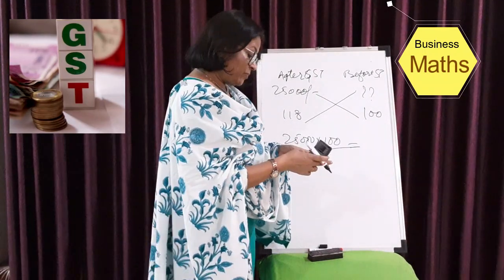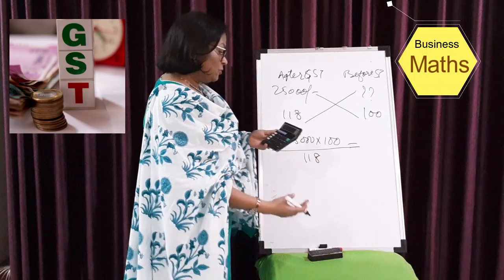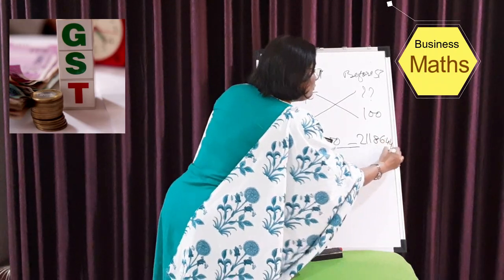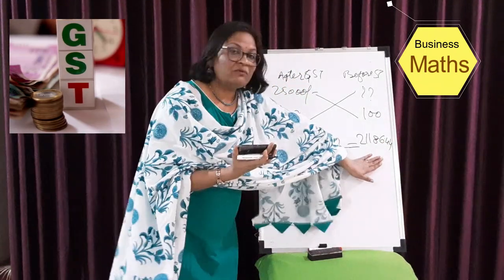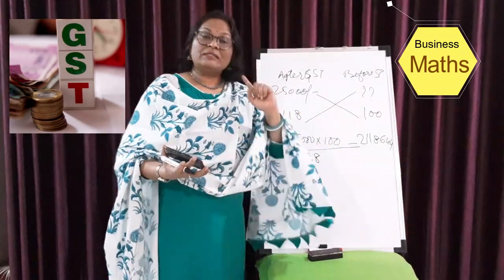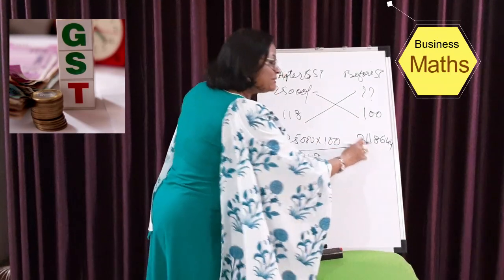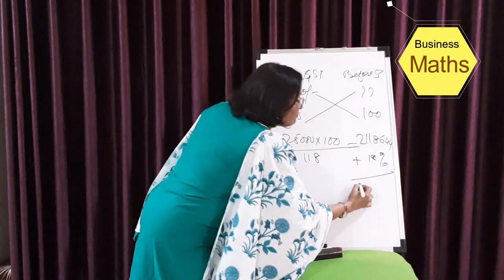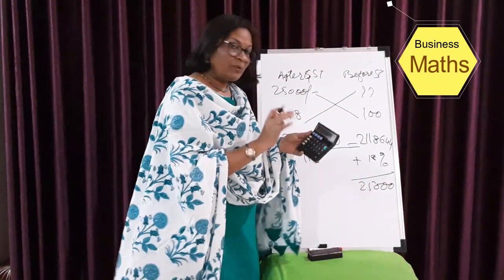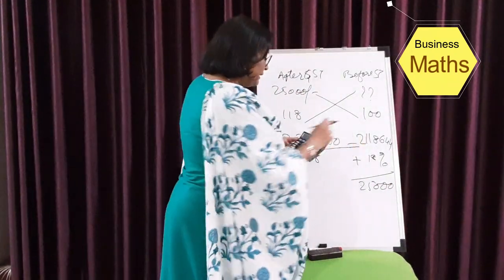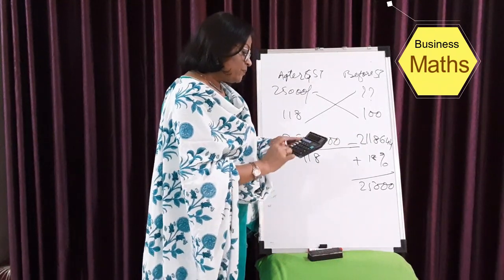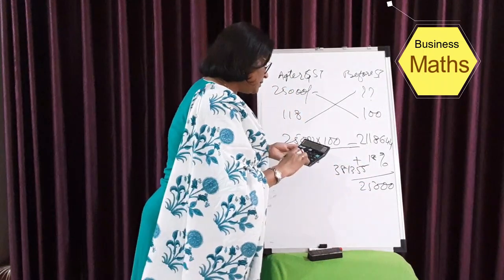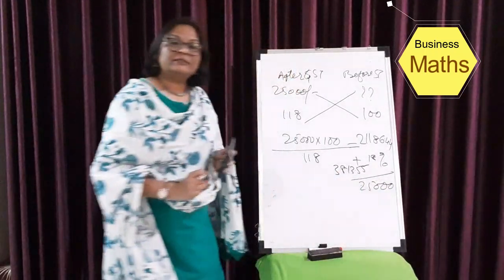So it is 25,000 × 100 ÷ 118, which gives 21,186.44 — that is your before-GST value. Now cross-check: take 21,186.44 and add 18% on it. 21,186.44 × 18% = 3,813.55, and 21,186.44 + 3,813.55 = approximately 25,000. So your answer is correct.